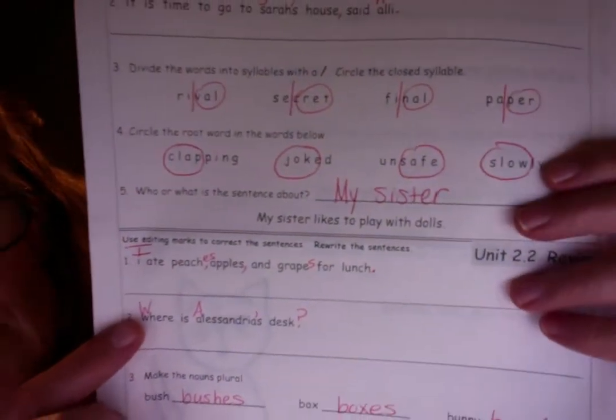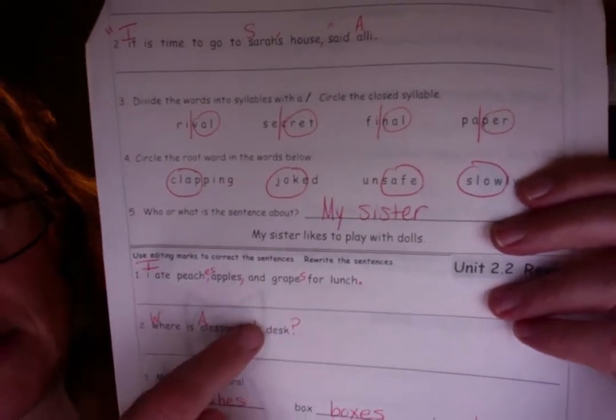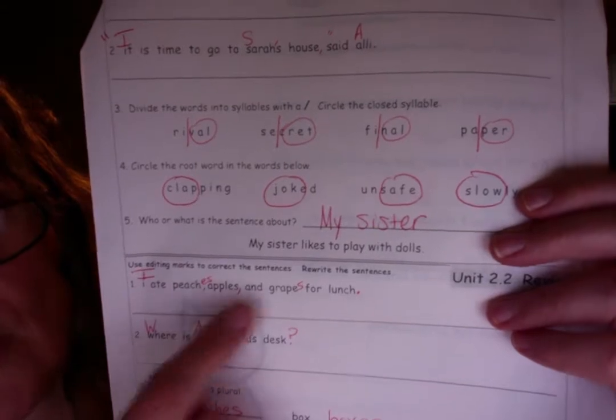All right. Where is Alessandria's house? Where needs a capital W. Alessandria's a name. So it needs a capital A. An apostrophe S. It's whose house?